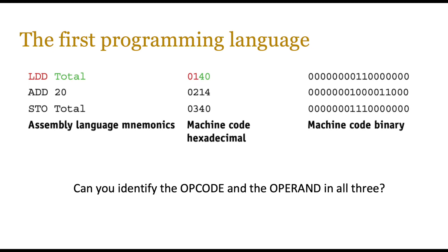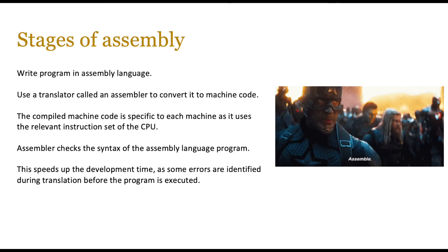You should be able to identify the opcode and operand in all three representations. Having the context of what that assembly language mnemonic means makes it much easier to recognize the code in hexadecimal and perhaps in binary. For example, LDD is the opcode, 'total' is the operand, and in hexadecimal it's 01 and 40. In binary you can work out the equivalent number of bits and split the machine code to identify the first part — the opcode — and the second part — the operand.